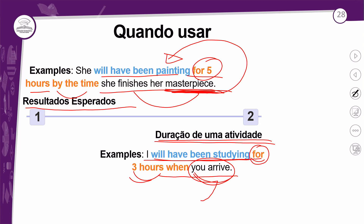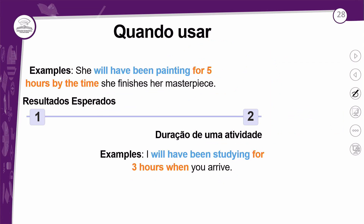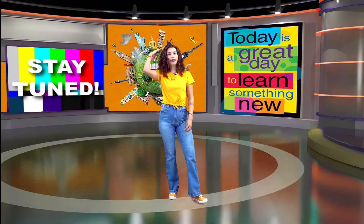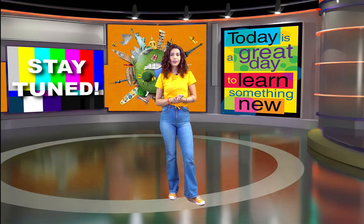Todas as frases estão na afirmativa, mas na negativa, basta colocar o 'not' entre o will e o have. E na interrogativa, você precisa colocar o verbo modal will na frente. Tudo bem? Vocês vão ficar aí com as atividades — está bem simples, bem prático.